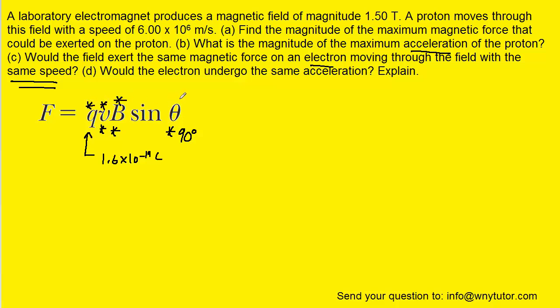So since the magnitude of the charge, speed, magnetic field, and the angle are all remaining the same, that means that the field would indeed exert the same magnetic force on the electron. So the correct answer to part C is yes.